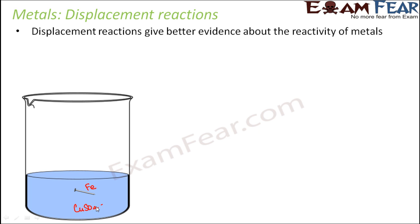It has been observed that when an iron nail is put into copper sulfate solution, over a period of time the color of the solution changes. Normally copper sulfate solution is blue, but over time the blue color fades away. This happens due to the reaction of iron with copper sulfate, which forms iron sulfate. Due to the formation of iron sulfate, the blue color fades — indicating that iron reacts with copper sulfate.